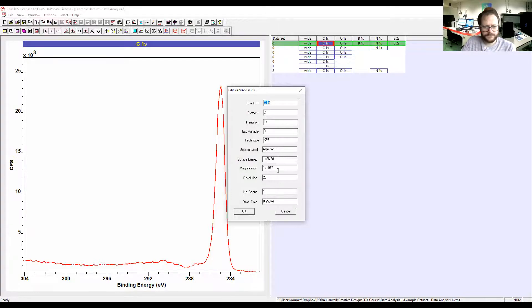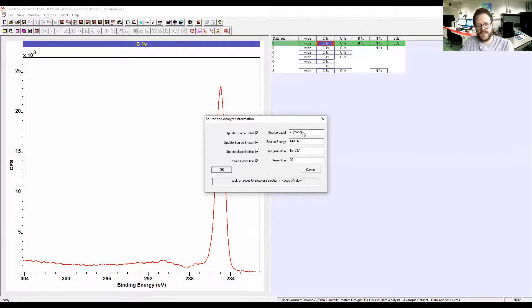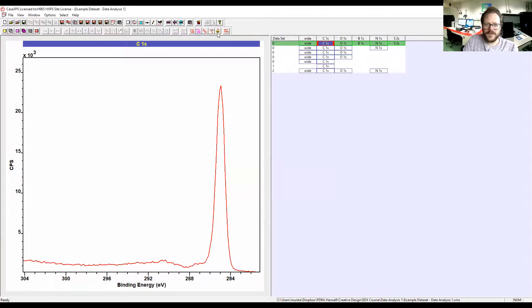If we click on our VAMAS block to open up some of these options, we can now click on X-ray Anode. This will tell you what X-ray anode was used. This is particularly important in terms of getting the right RSFs. The library files that we mentioned earlier will contain sensitivity factors for the different sources that are available. For example, on this system if we were to have an aluminum X-ray anode and a magnesium X-ray anode, if we were to change this source label to Mg and update that, it would then load the sensitivity factors for the magnesium anode. But I don't recommend you change any of the values in here, because you might forget why you changed them.